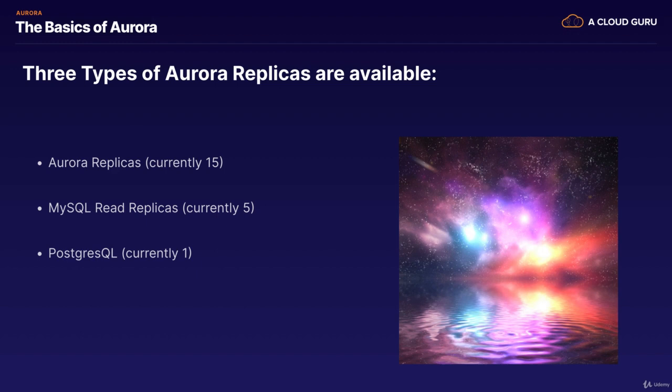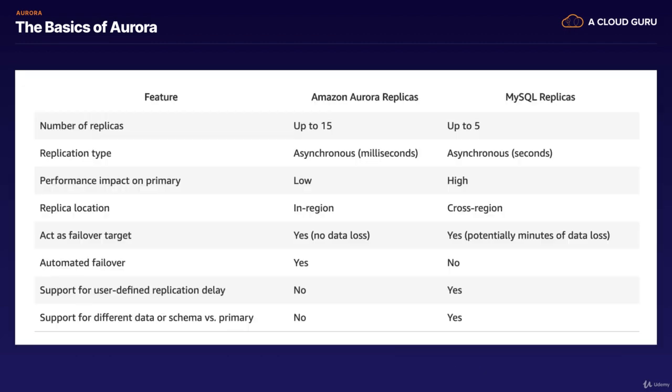There are three different types of Aurora replicas available. We've got our normal Aurora replicas — there are currently 15 available per Aurora database. We then have up to five MySQL read replicas, and then you can also have one PostgreSQL read replica. These are read replicas on top of your normal Aurora production database.